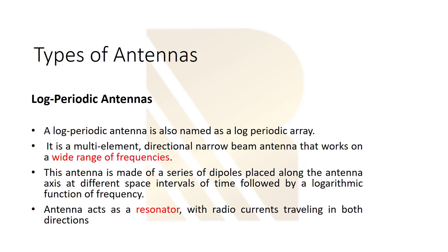We are going to types of antennas. The first type we are going to talk about is log periodic antennas. Log periodic antenna is also named as a log periodic array because it consists of arrays of metals. It's a multi-element directional narrow beam antenna that works on a wide range of frequencies and is made of dipoles placed along the antenna axis at different space intervals. That's why we call them array.